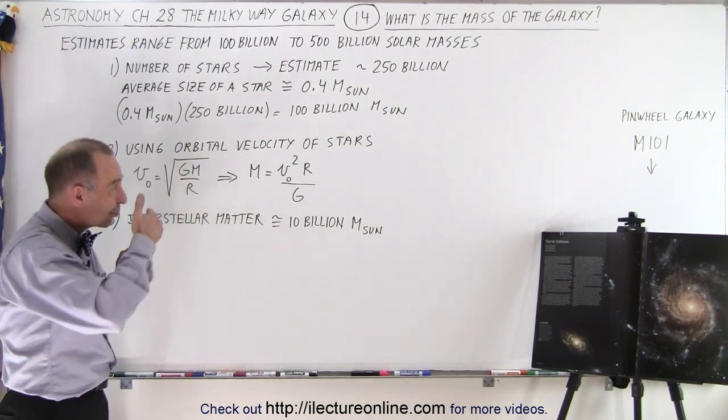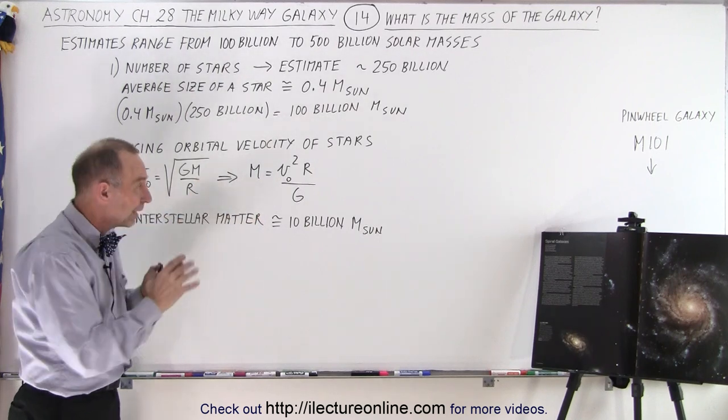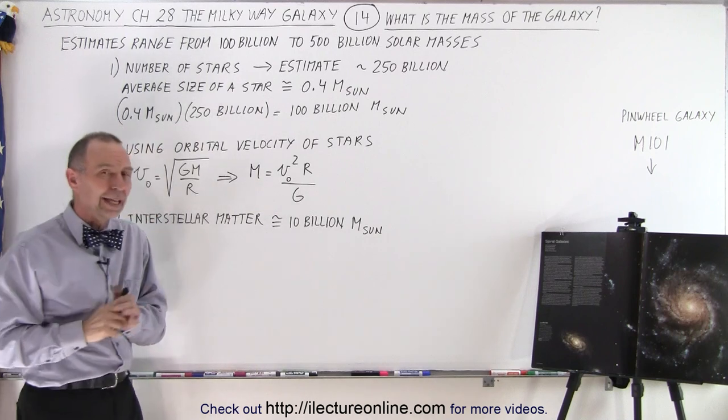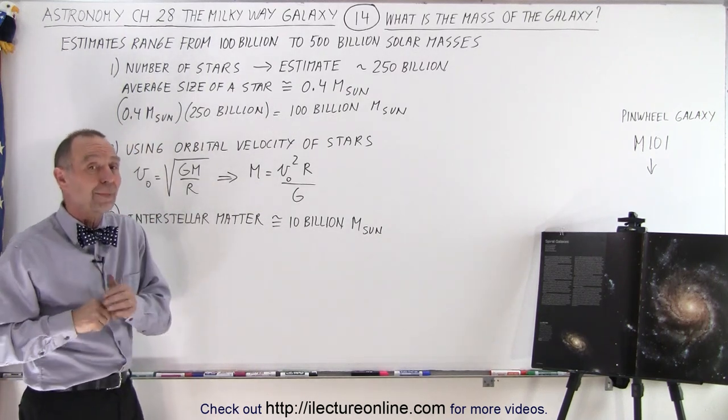When we begin to use that and try to find the velocity of stars and nebulas further and further out, try to calculate what the mass of the galaxy is, they did come up with estimates that were definitely bigger than 100 billion times the mass of the sun.